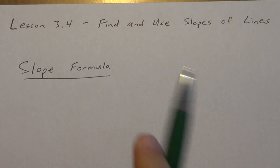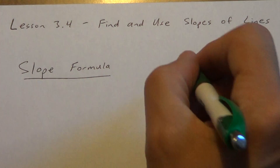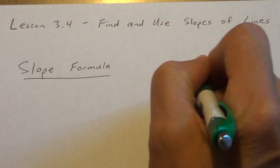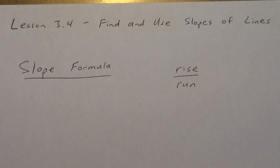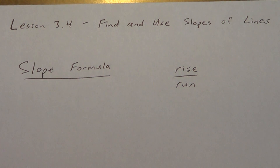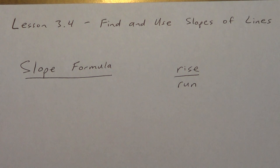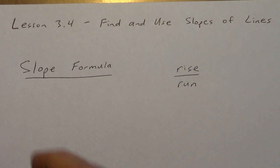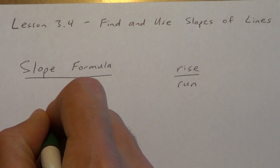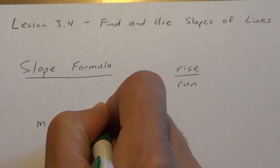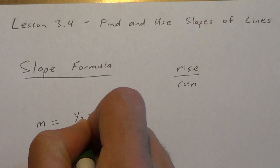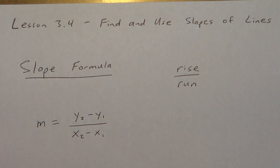The first thing you've got to know is the slope formula. Sometimes we say slope is rise over run, and that's something we can use, but that's more of a definition. You definitely need to know the formula itself. We usually use the letter m for slope, so m equals y2 minus y1 over x2 minus x1.